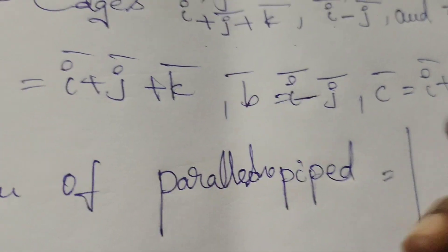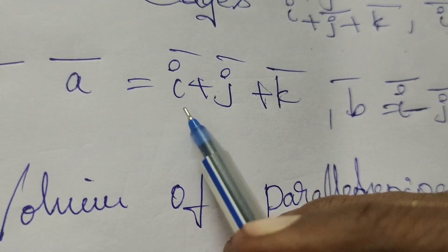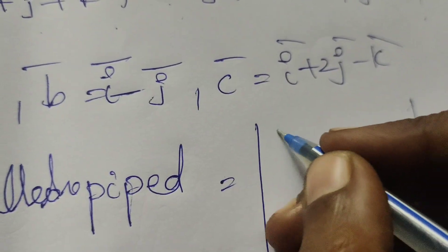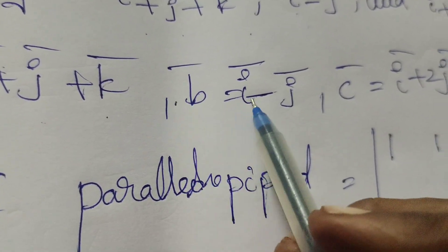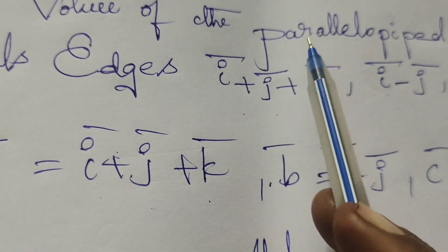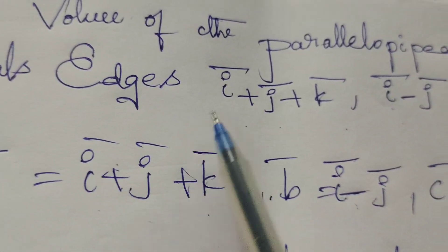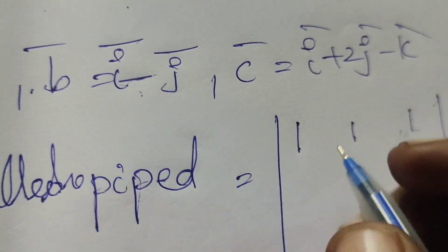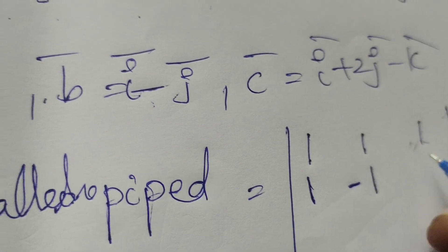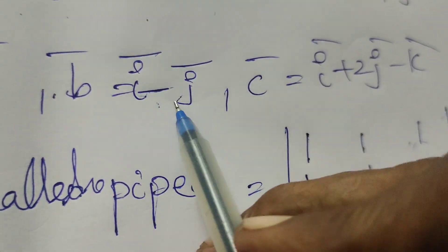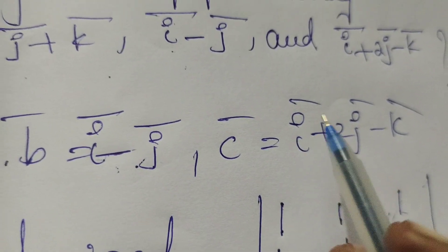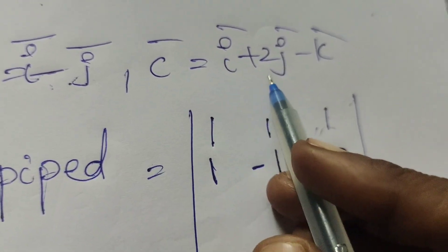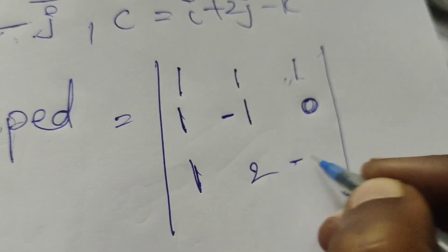In the determinant method, we write the coefficients of i, j, k for each edge vector. First row: coefficients of a-bar are 1, 1, 1. Second row: coefficients of b-bar are 1, -1, 0 — there is no k-bar term. Third row: coefficients of c-bar are 1, 2, -1.